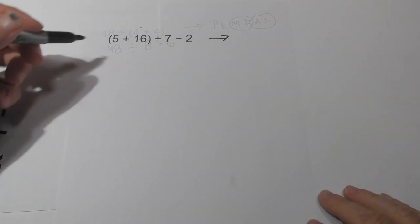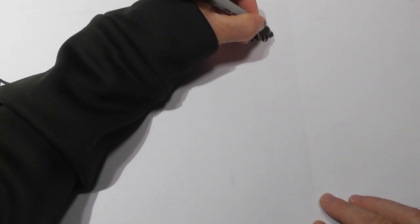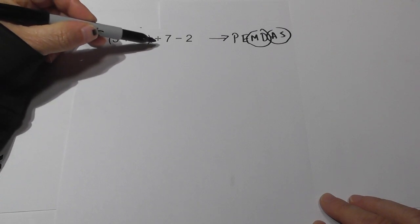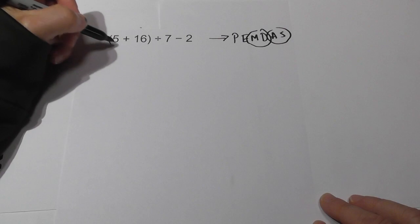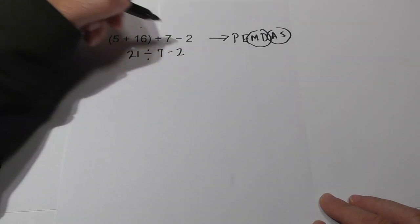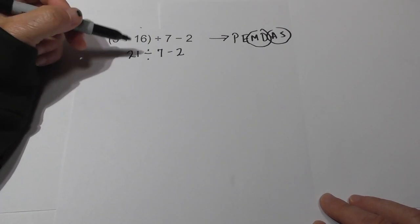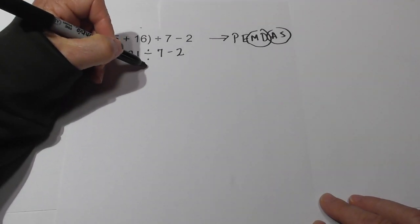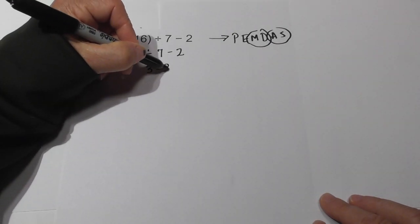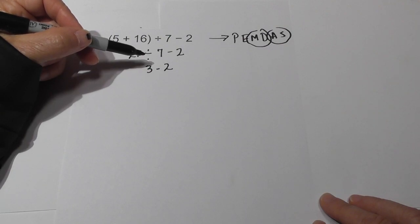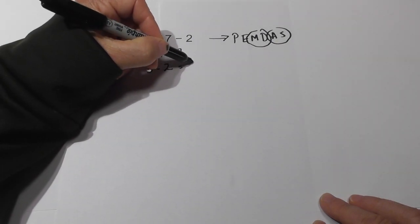Working from left to right: parenthesis, exponents, multiplication, division, add, subtract — these go together. Do we have parenthesis? Yes — 5 plus 16 is 21. Bring everything else down. No parenthesis, no exponents. Do we have multiplication or division? Yes — 21 divided by 7 is 3. Bring down the 2. No parenthesis, no exponents, no multiplication or division. So 3 minus 2 equals 1.